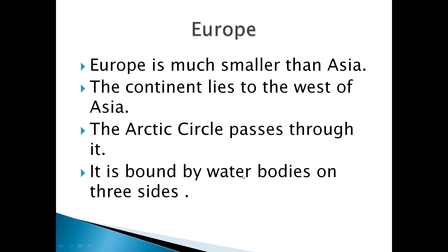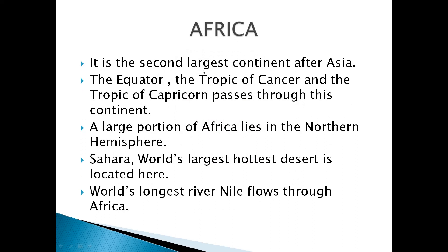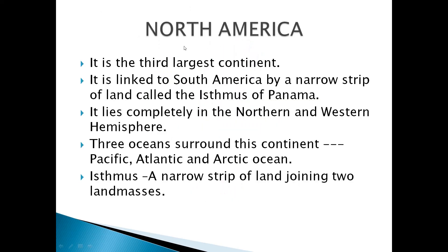Africa is the second largest continent after Asia. The equator, Tropic of Cancer, and Tropic of Capricorn — three important parallels — pass through this continent. A large portion of Africa lies in the northern hemisphere. The Sahara, which is the world's largest and hottest desert, is located in Africa. The world's longest river, the Nile, also flows through Africa.